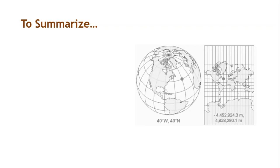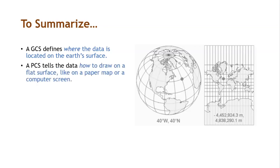Just to summarize before we wind up: a GCS defines where the data is located on the earth's surface, whereas a PCS tells the data how to draw on a flat surface like on a paper map or a computer screen, which is exactly the case of projection.